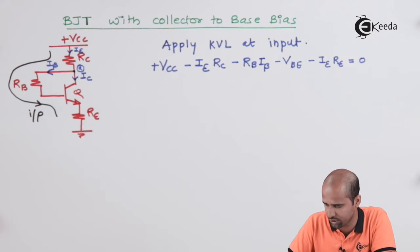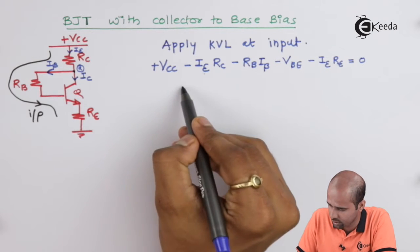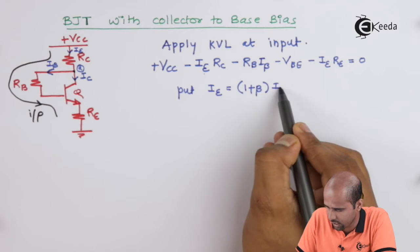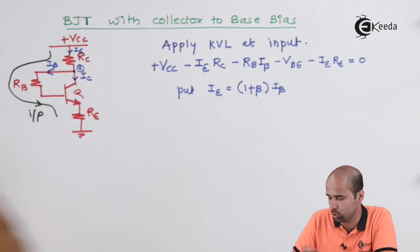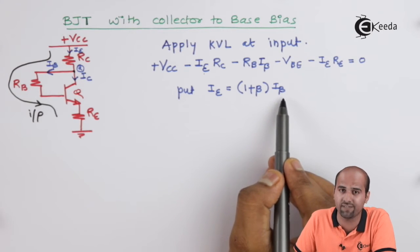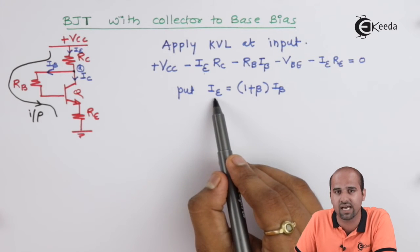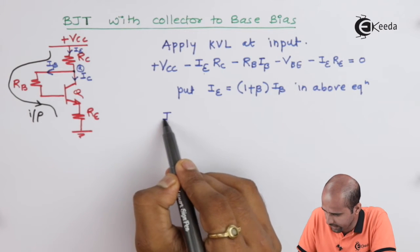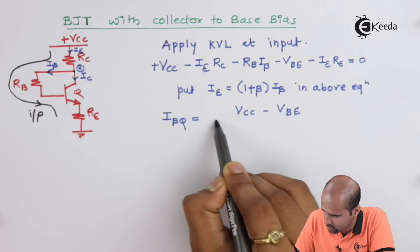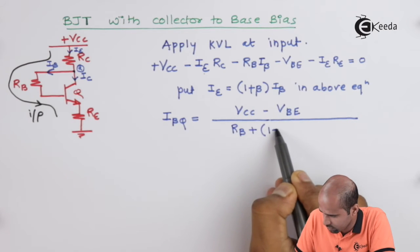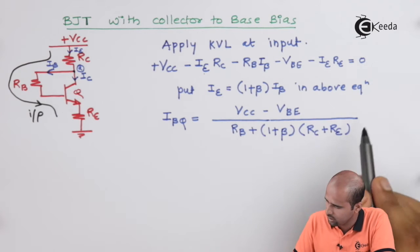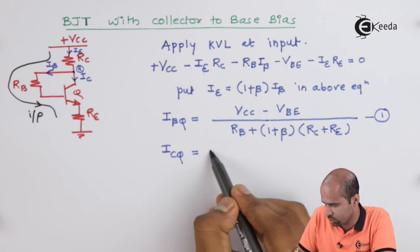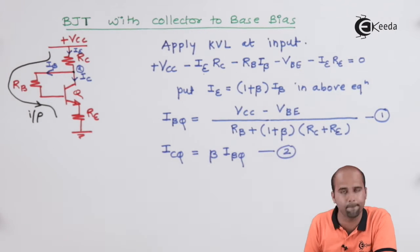From the KVL equation, we convert IE into IB. We write IE equal to (1 + β) times IB. Note: for finding the Q-point parameter we express IE in terms of IB only, while for finding the stability parameter we express IE as IC plus IB. From this we directly write IBQ as the first equation (Equation 1). The second equation is ICQ equals β times IBQ.